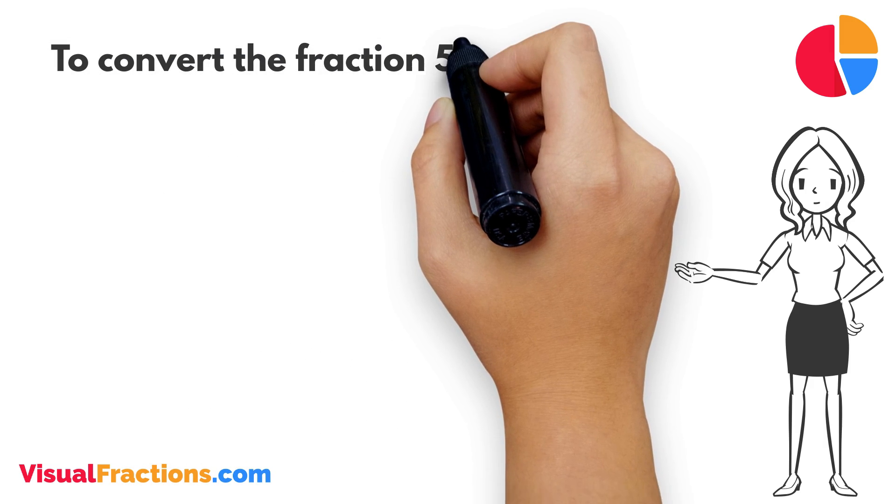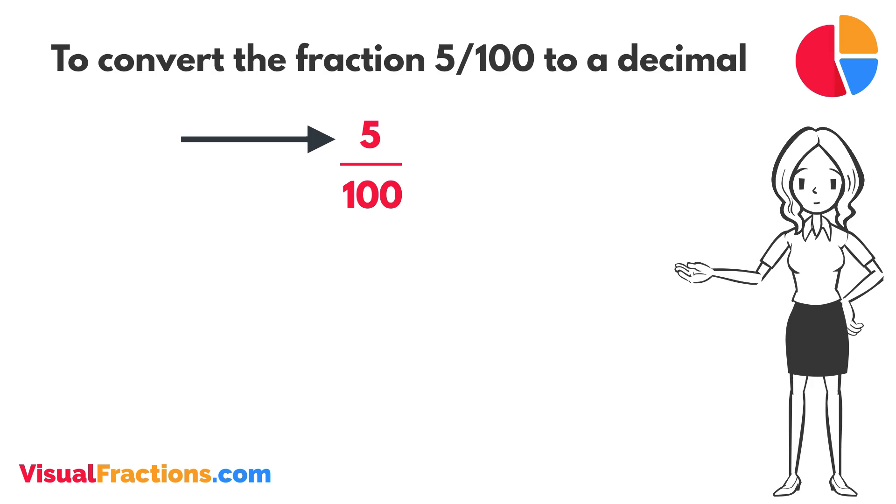To convert the fraction 5/100 to a decimal, all we need to do is divide the numerator, the top number, by the denominator, the bottom number.